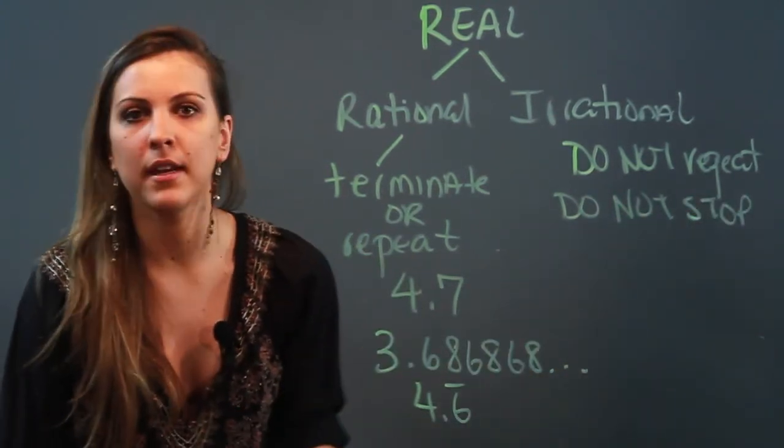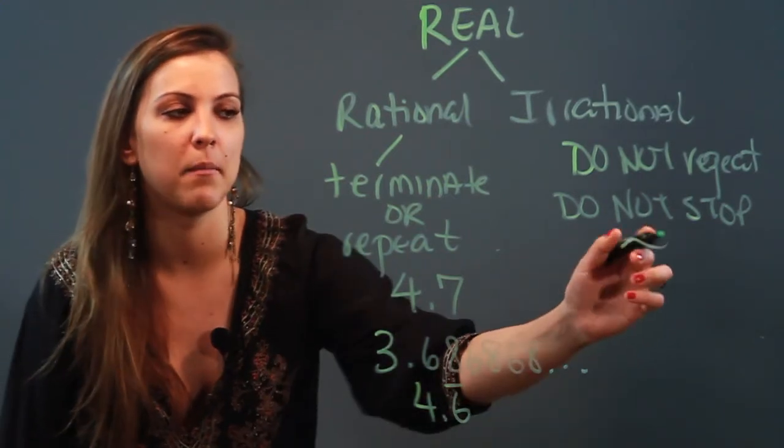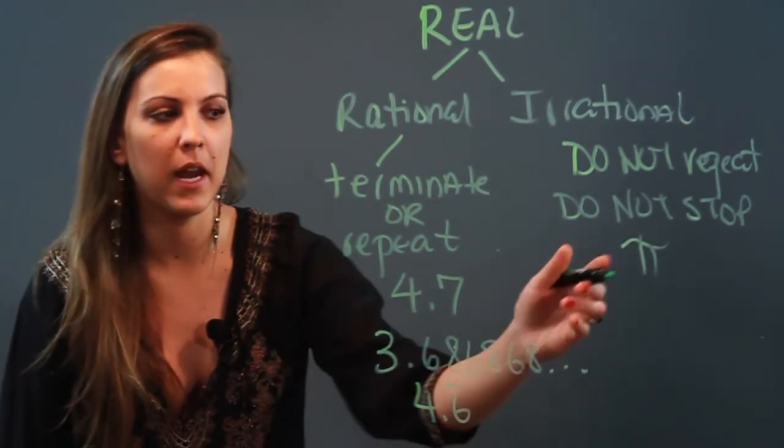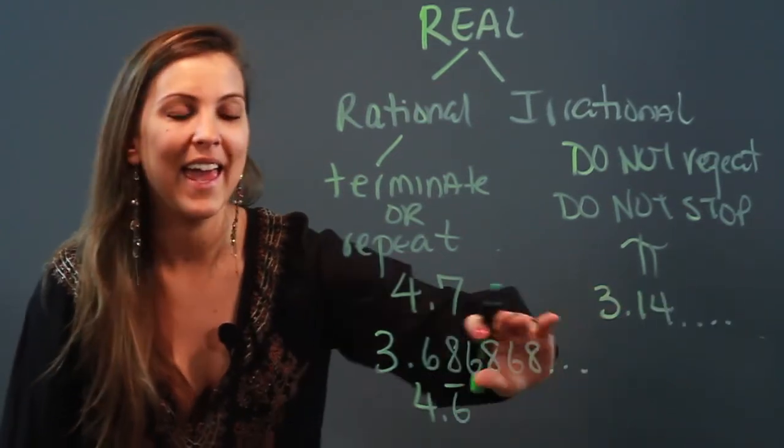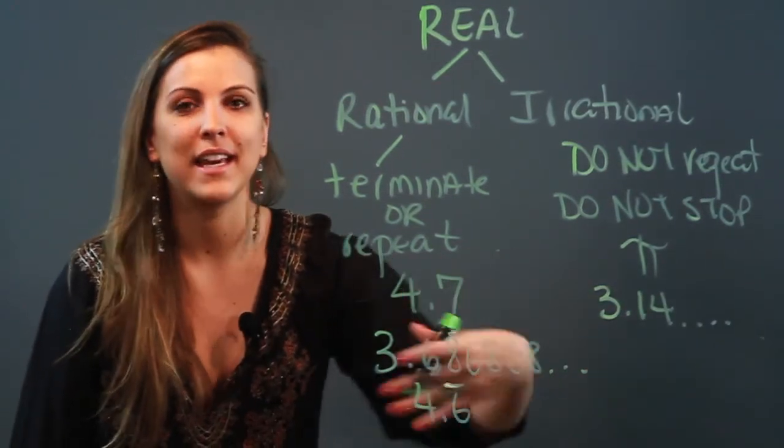And the most common example of an irrational number is the number pi. Because if you write out pi, it's going to be 3.14, and it goes on and on and it never repeats. There's never a pattern and it does not stop.